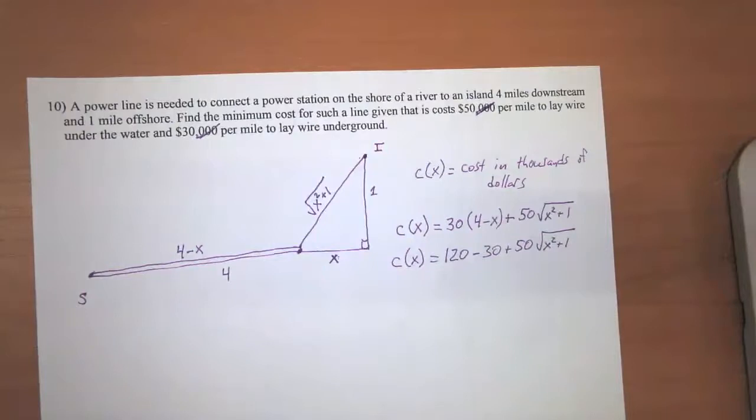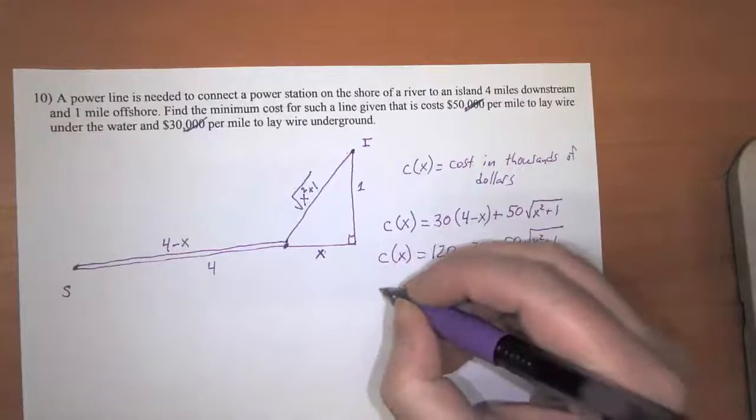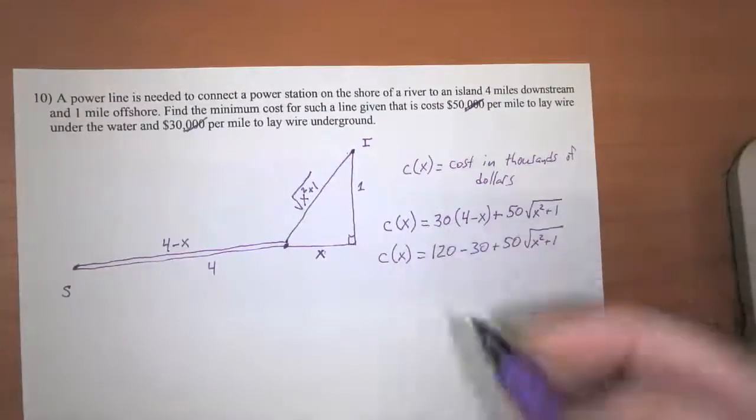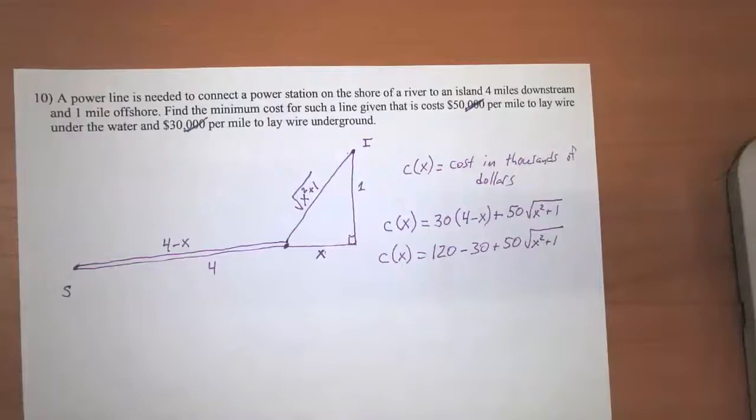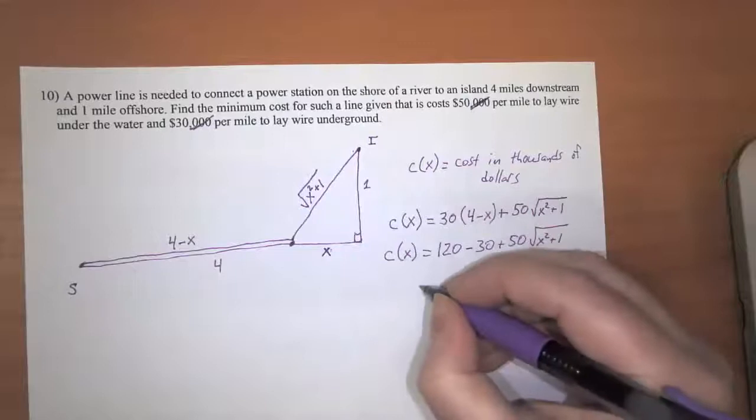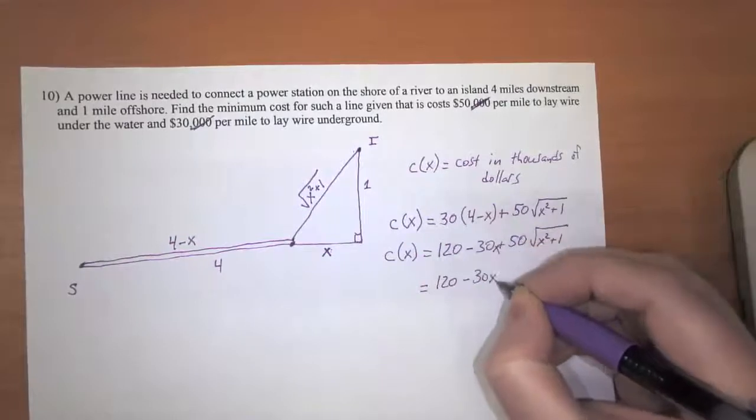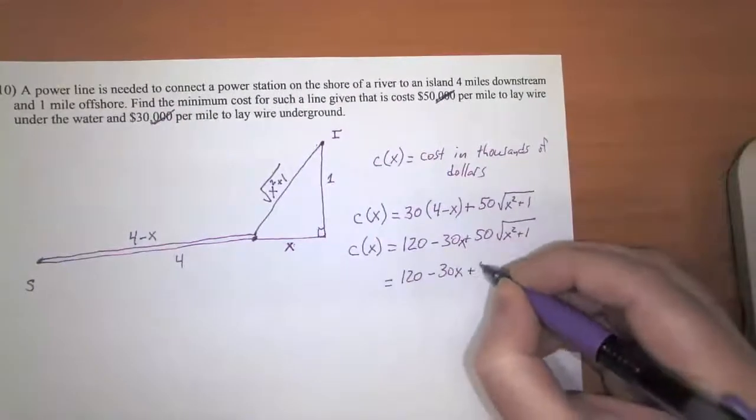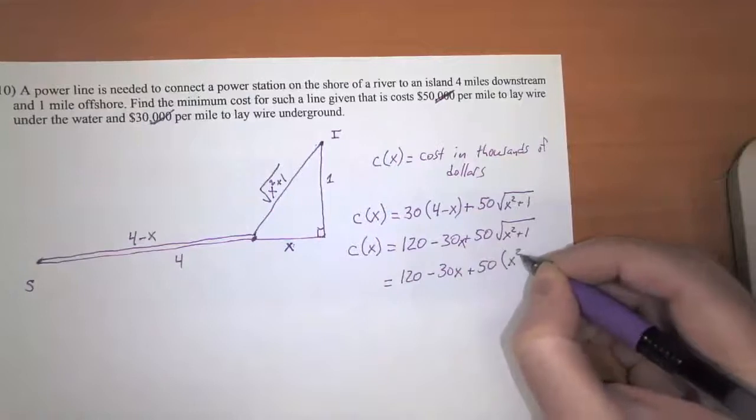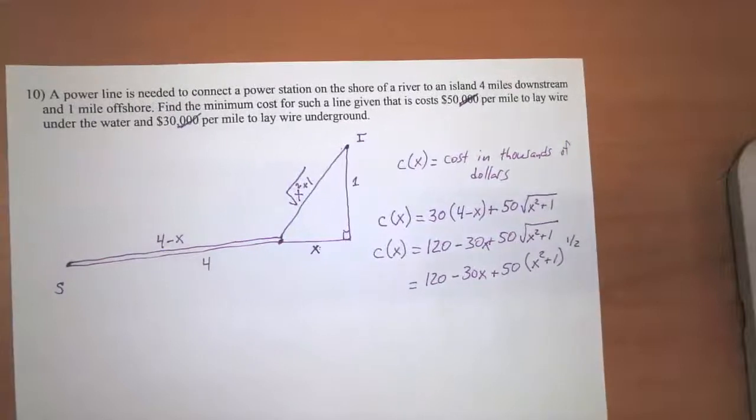Okay, so c prime of x. Why don't we do one thing to make this look a little bit cleaner? Since we know that the square root is something we can use the power rule on, why don't we change this into an exponential form. So we'll just write this as 120 minus 30x plus 50 times (x squared plus one) to the one half power.